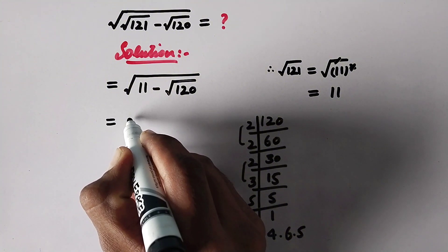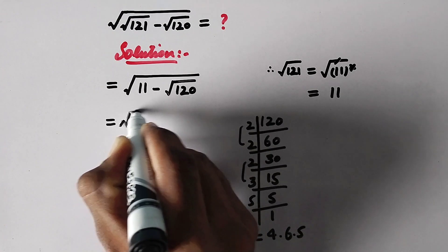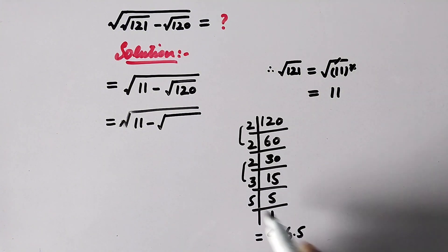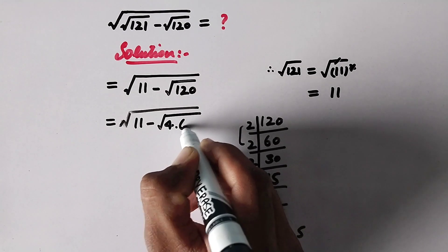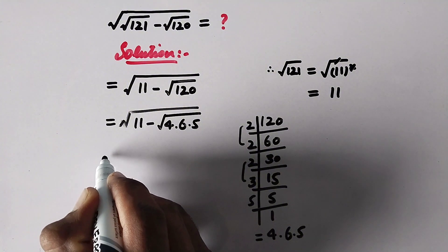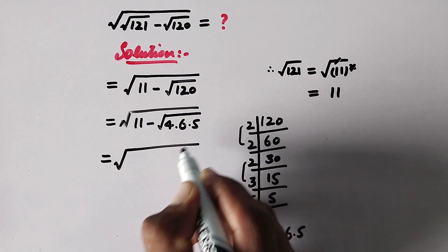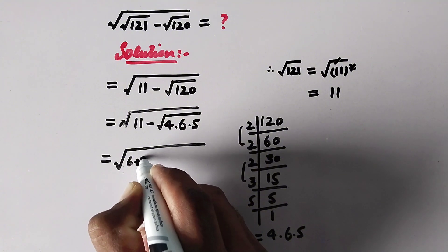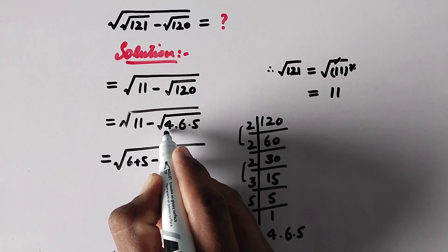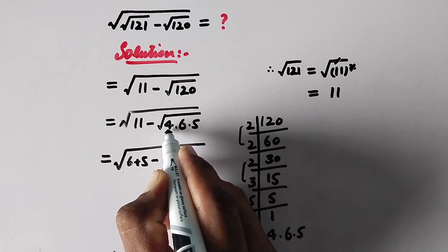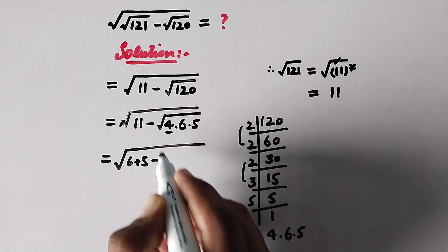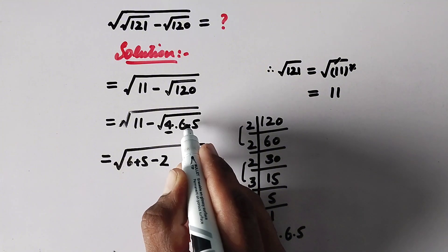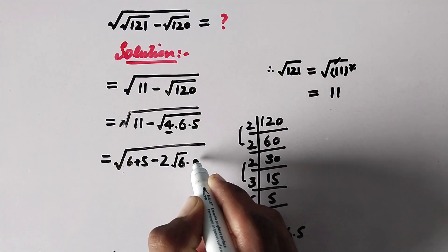So it will be equal to square root of 11 minus square root of 120, where 120 is the same as 4 times 6 times 5. In the next step, 11 can be expanded as 6 plus 5, and 4 is the same as 2 squared. So 2 squared will come out of the square root as 2, and we are left with square root of 6 times 5, which can be written separately as square root of 6 times square root of 5.